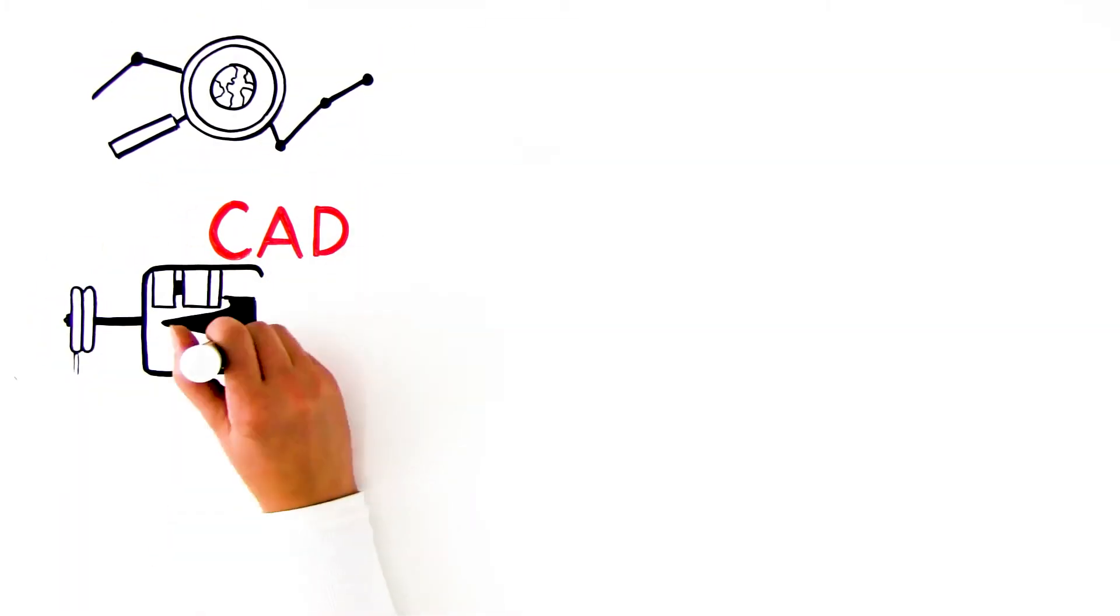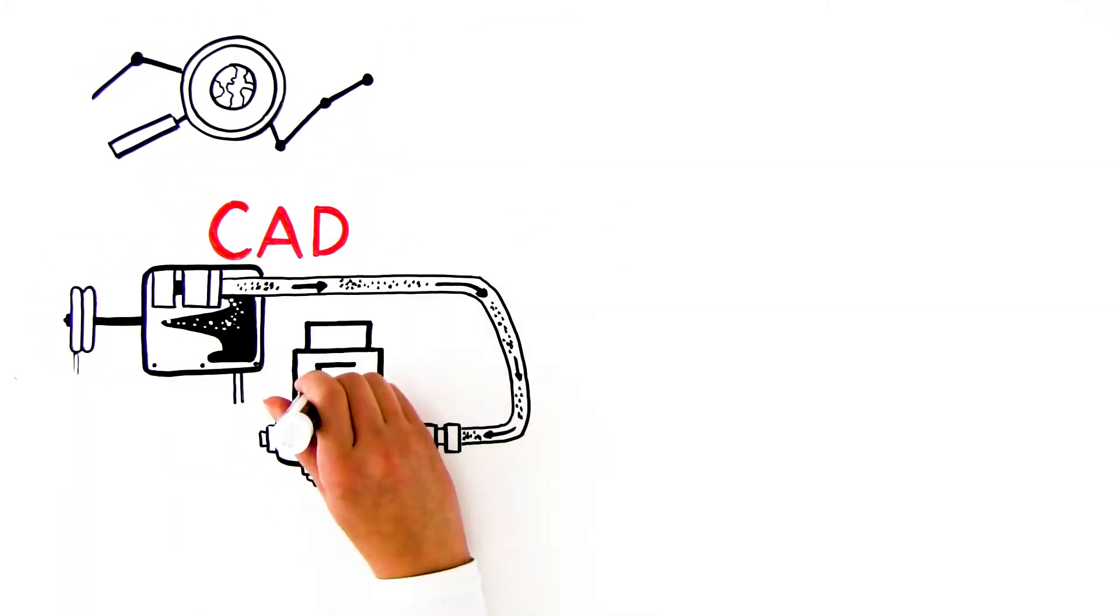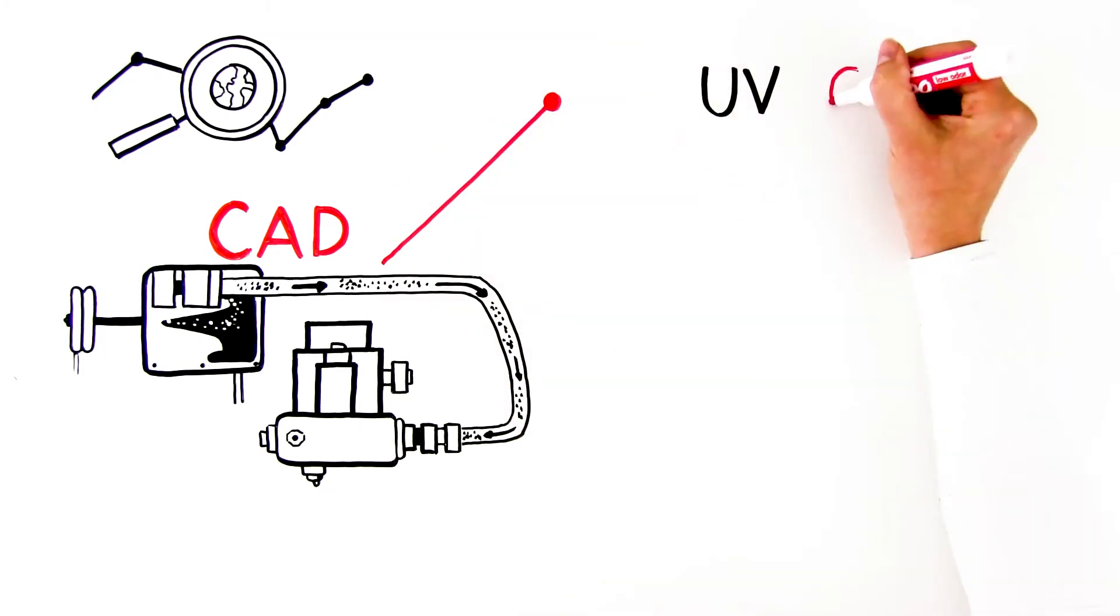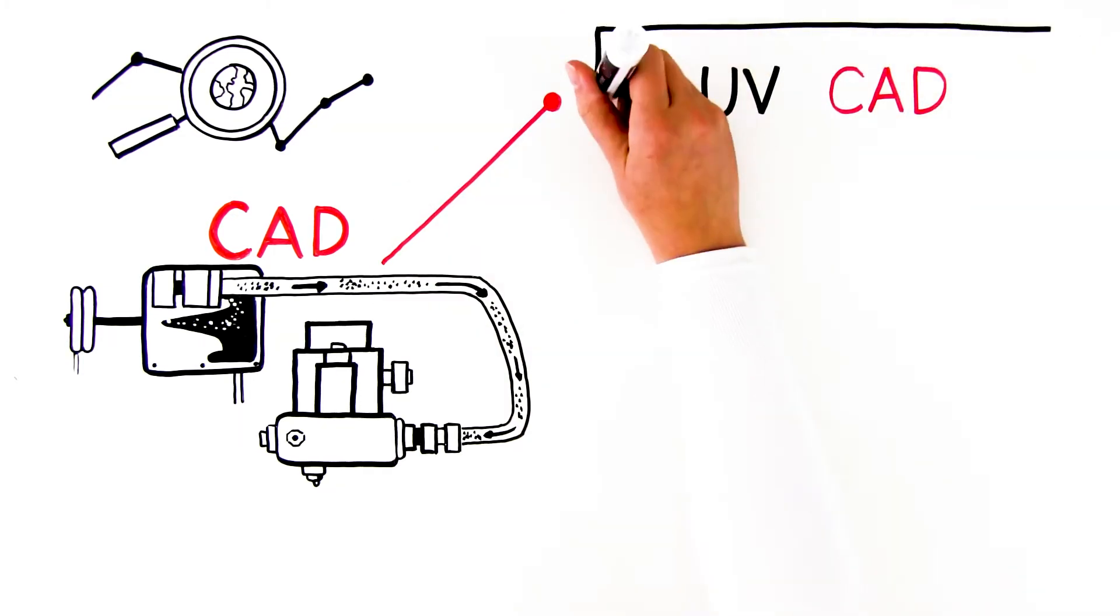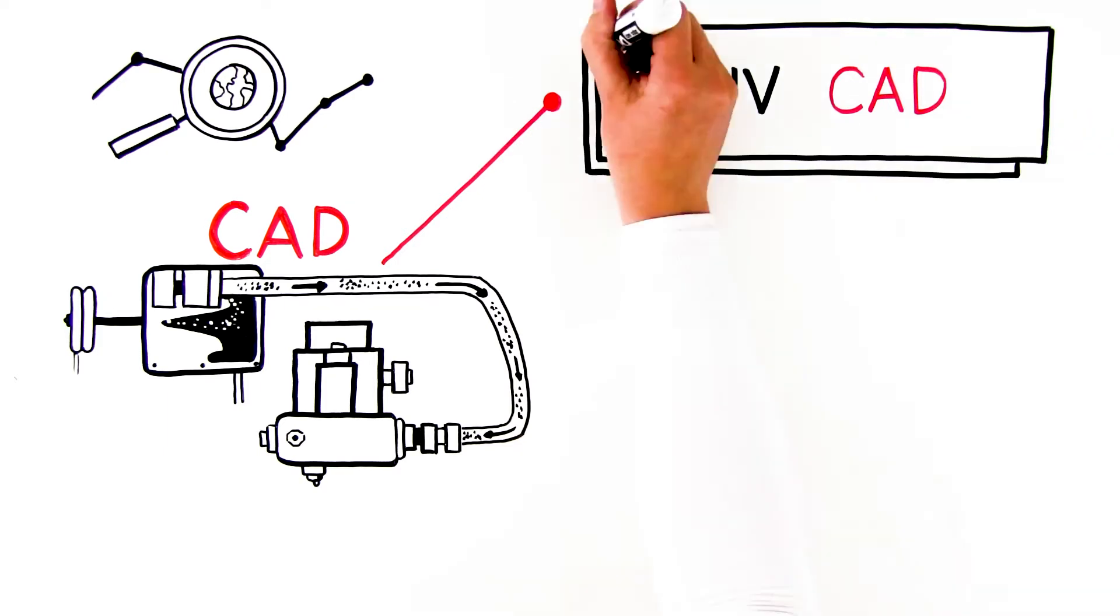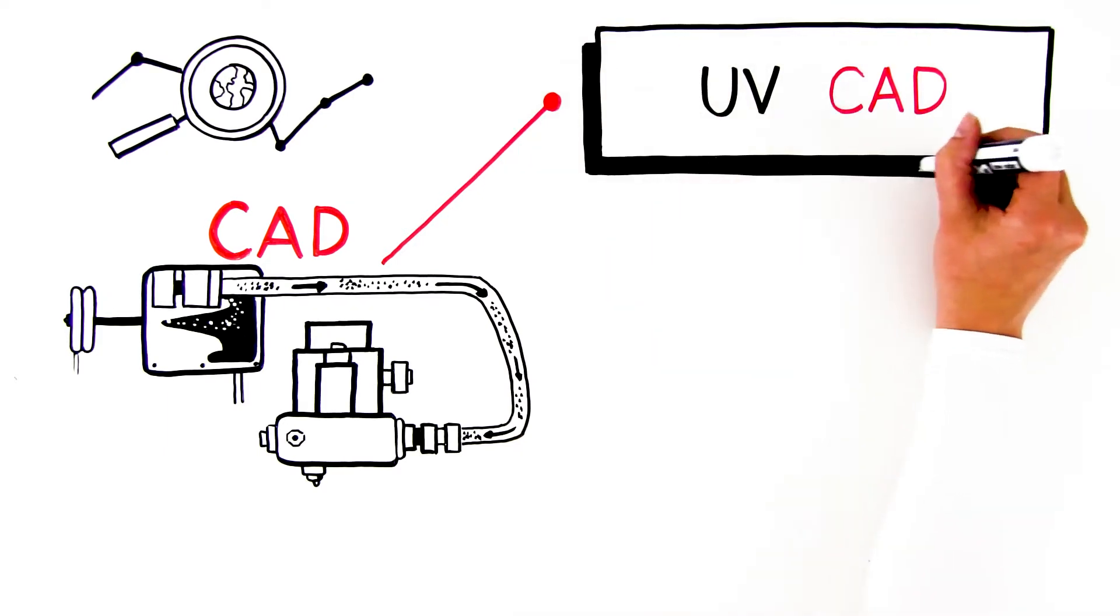The best part is you don't have to choose one detection method over another. Because CAD is a universal detector, you can use it to complement your HPLC UV analysis in a situation where excipients in a formula are a mix of UV-active and inactive components.